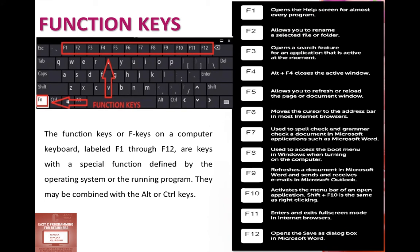First we will see function keys. The function keys or F keys on our computer keyboard labeled F1 through F12 are keys with a special function defined by the operating system or the running program. They may be combined with the alt and control keys. Some keys perform direct actions and some keys are combination keys you can use with ctrl button or alt button. Like alt plus F4, then active window closes. F1 by default opens help. F2 renames file or folder. F3 is search feature.